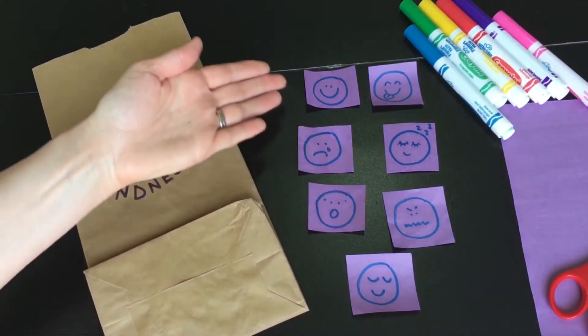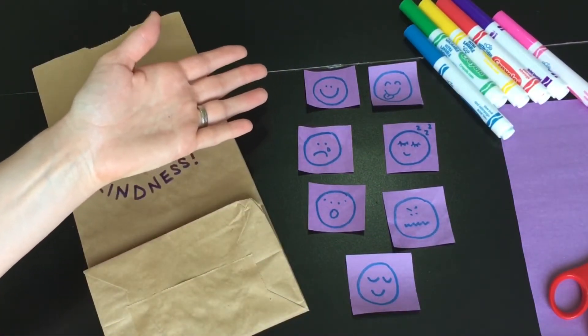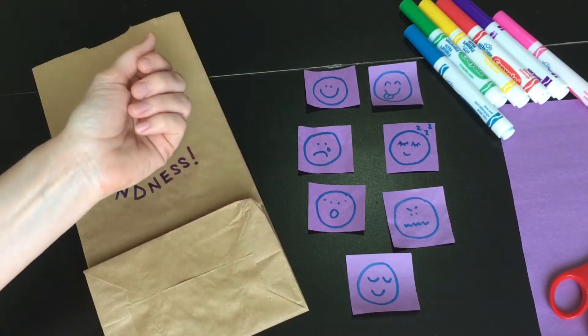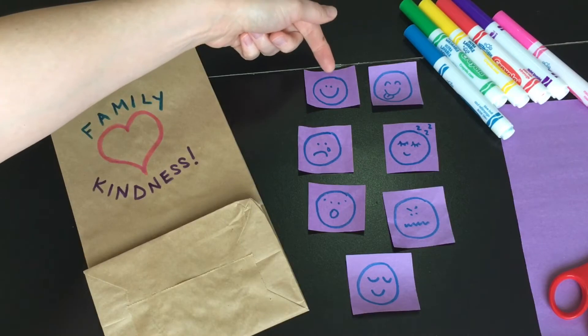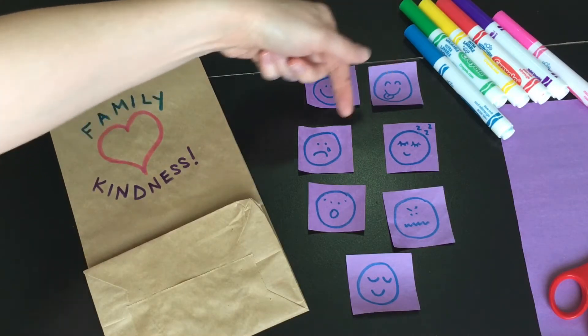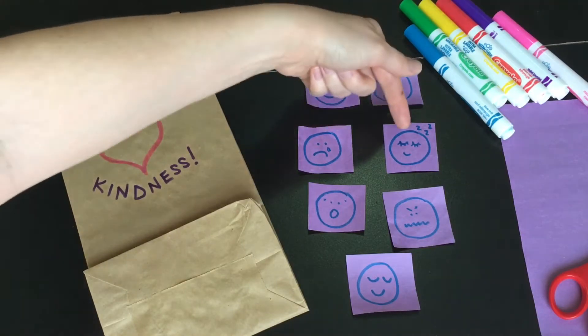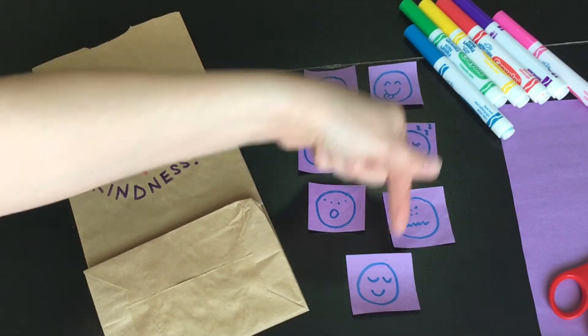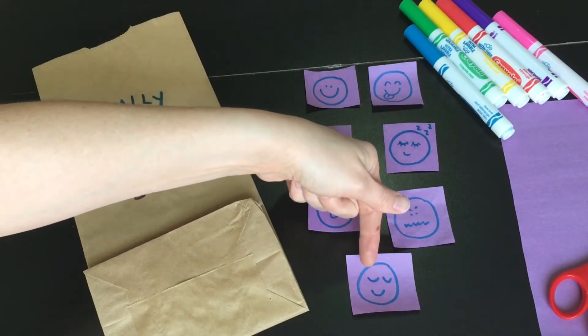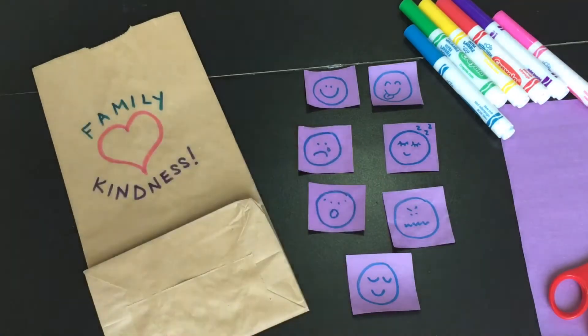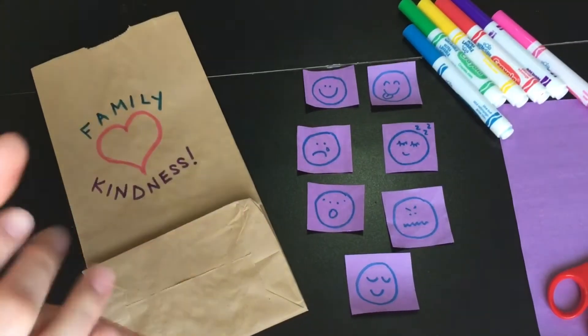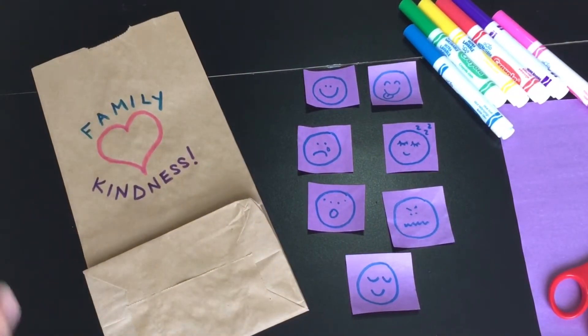Here are some ideas from my family. My kids and I came up with various feelings they wanted to use: happy, silly, sad, sleepy, surprised, mad, and this one is my favorite, calm. Come up with your own. You can have as many or as few feelings as you like. It's always a bunch of fun.